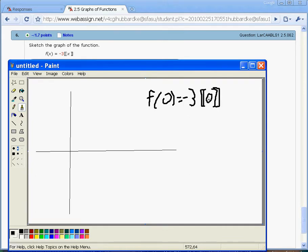And the floor of 0 is 0, so we have negative 3 times 0, and that gives us out 0. So I go 0, right?